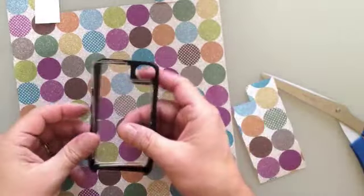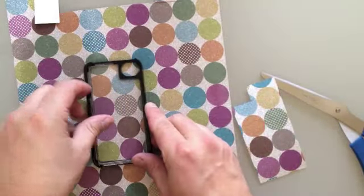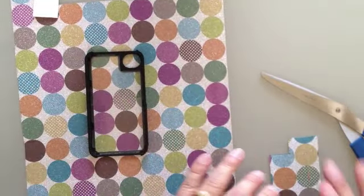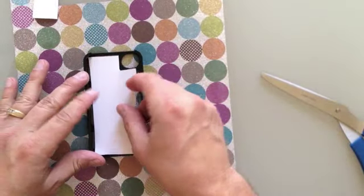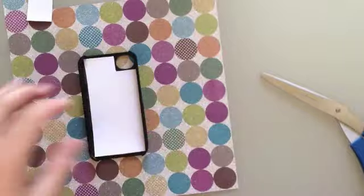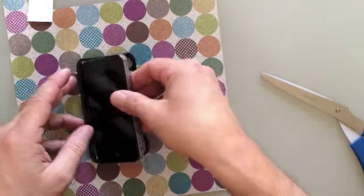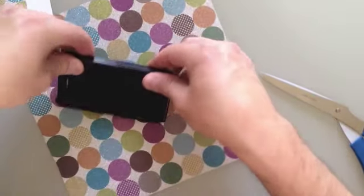Now we're going to put it in the case. We just take the template, drop it back into the case, take our piece of scrapbooking paper we just finished cutting, place it right inside the case, and snap our phone in.